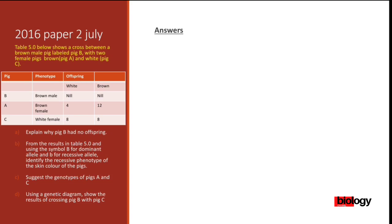Without wasting much of your time, let us begin. Table 5.0 below shows a cross between a brown male pig labeled big B with two female pigs: a brown female pig and a white female pig. We've got a brown male pig crossing with a brown female pig and a white female pig. The table shows us the results after that crossing.